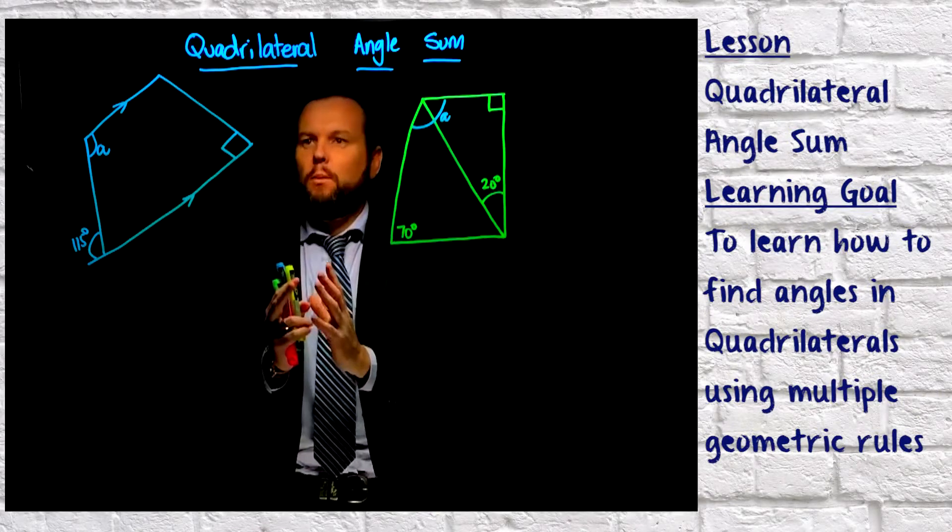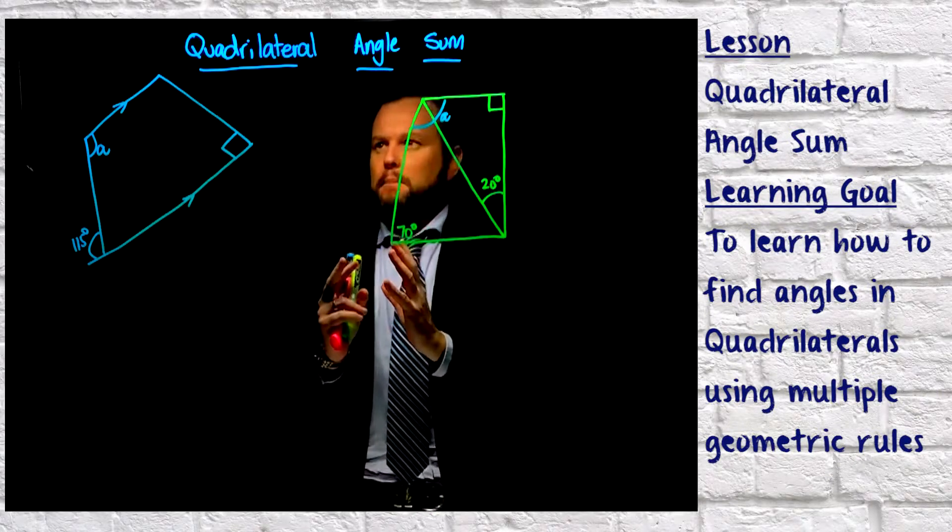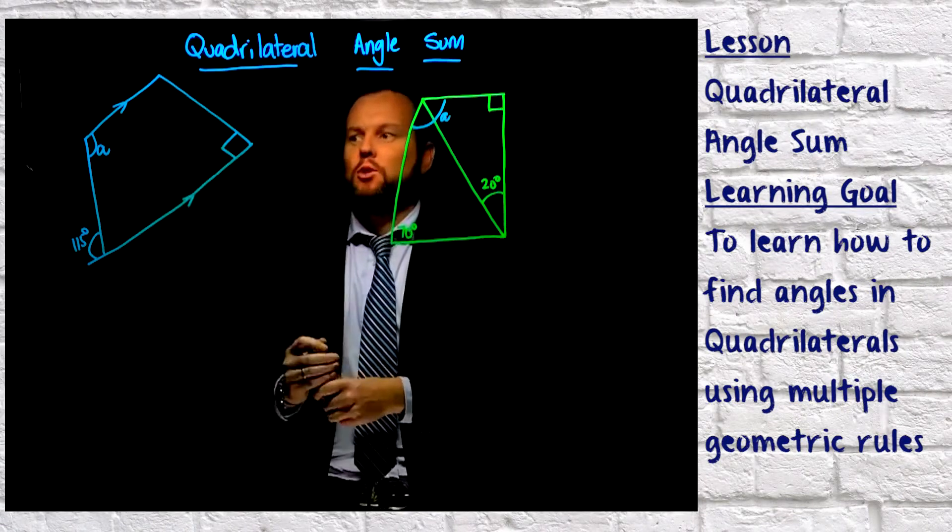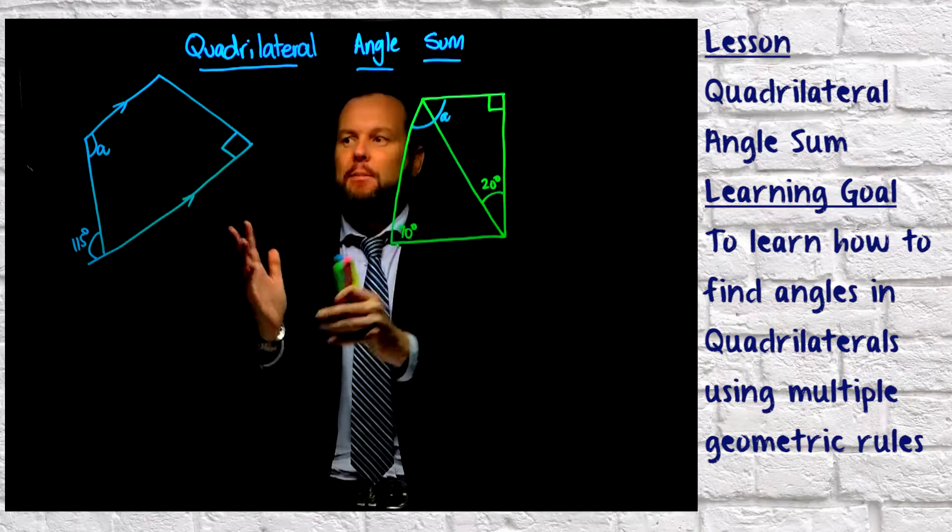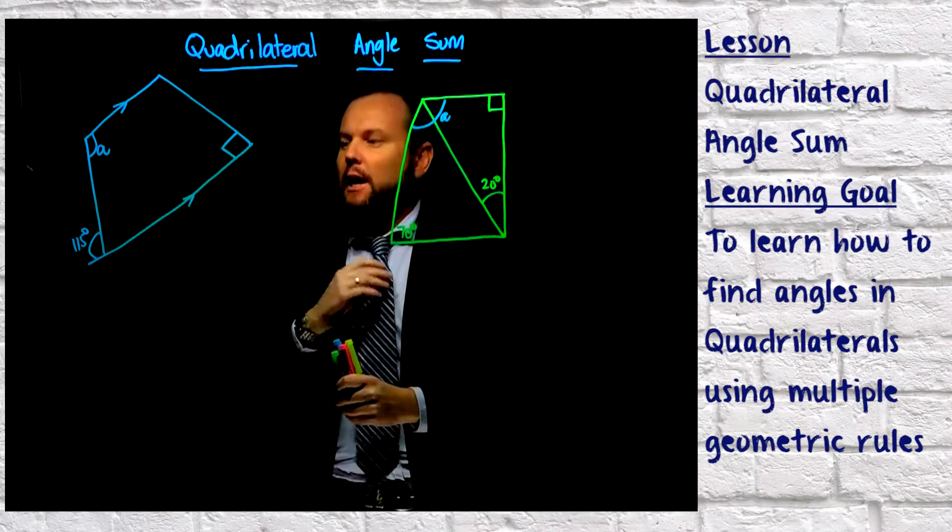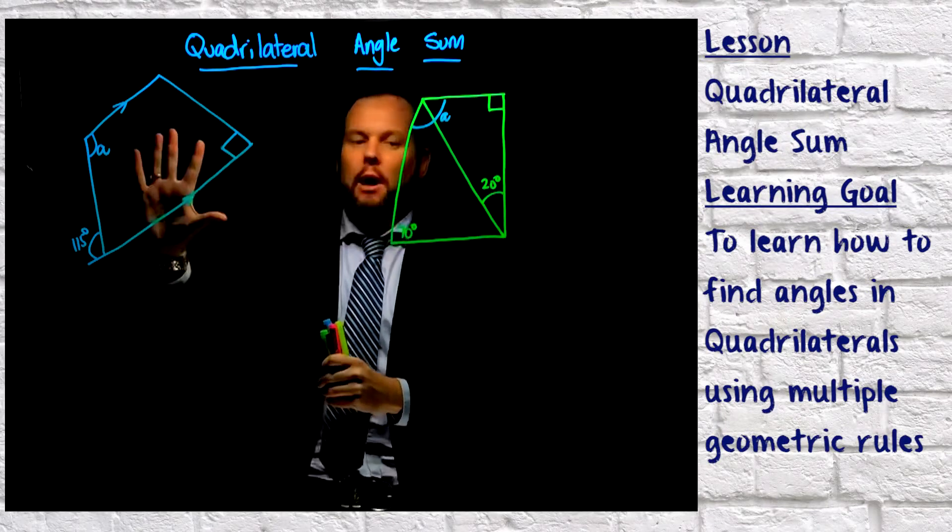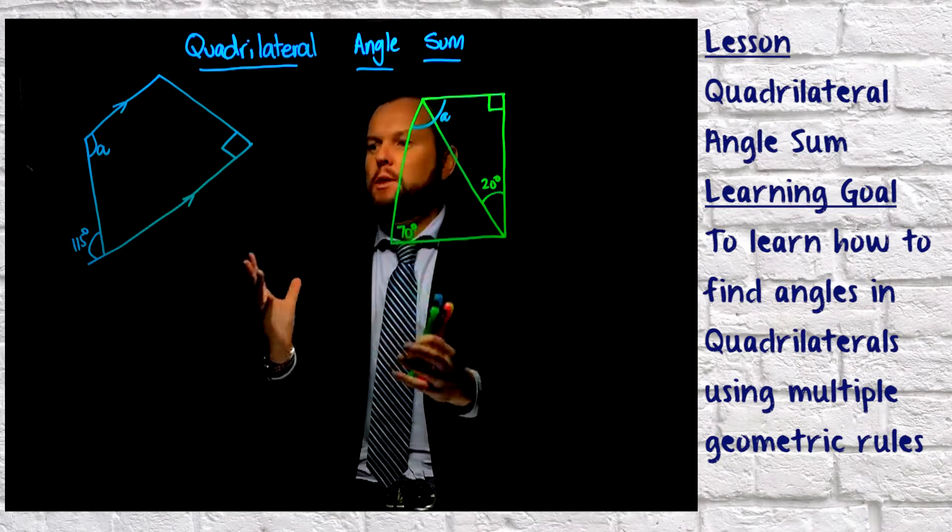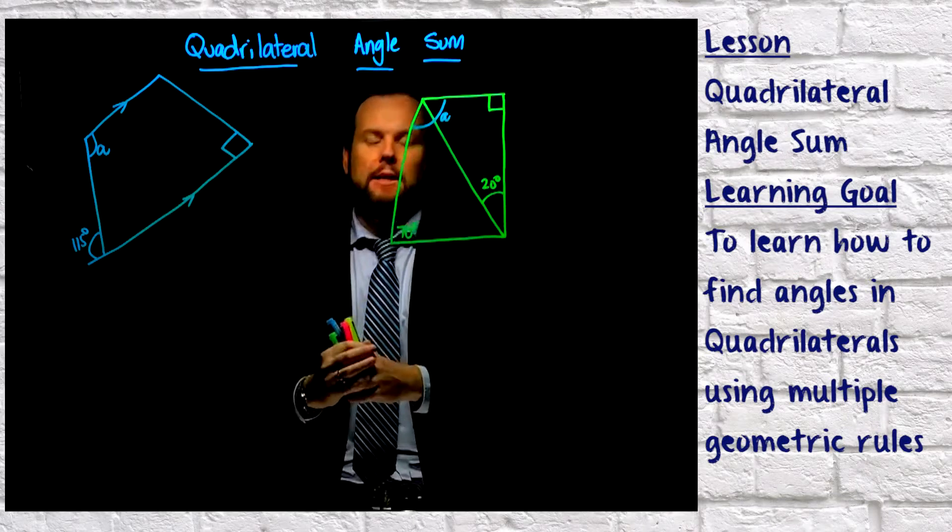Okay guys, so sometimes when we're finding the values inside a quadrilateral, we need to use a heap of information and our knowledge of parallel lines, and also things like vertically opposite angles and all those sorts of things to help us find the answer.